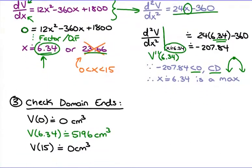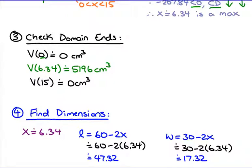We should also check the domain endpoints — 0 and 15 — by substituting them into the volume formula, just to make sure our critical value is an absolute maximum and not just a local one. Subbing X = 0 into the volume equation gives zero, which makes sense: with no corner cut, you don't have a box. Subbing X = 6.34 gives 5196 cubic centimeters. Subbing X = 15 also gives zero, which we don't want. So the maximum volume is clearly at X = 6.34.